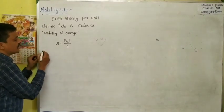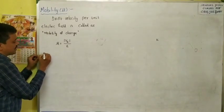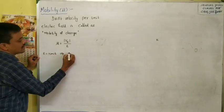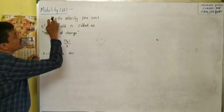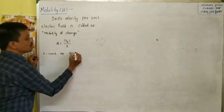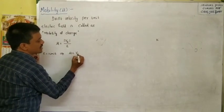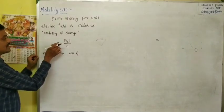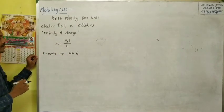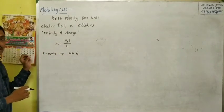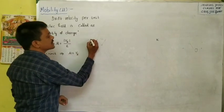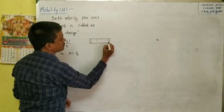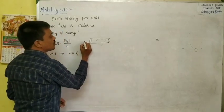For example, if you apply one unit of electric field, then the mobility (denoted by mu) is equal to the drift velocity per unit electric field. Drift velocity per unit electric field is called as mobility.